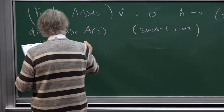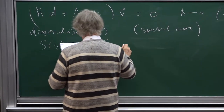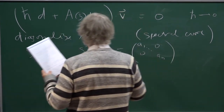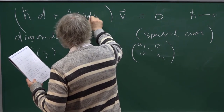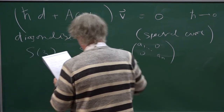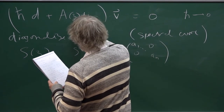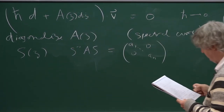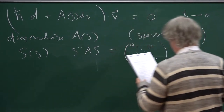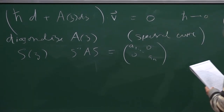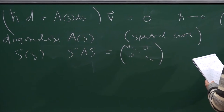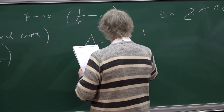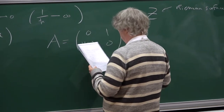Let's choose S of z so that S inverse A S is a diagonal matrix, which I'll write A1 through AN. A is really the matrix of one-form, so it includes a dz. Let's look at an example: A is the matrix [0, 1; V(z), 0] times dz.